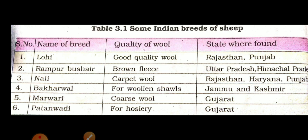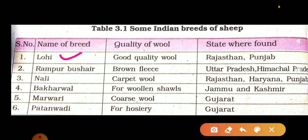There are some Indian breeds of sheep. The first is called Lohi. Lohi has good quality wool and it is found in Rajasthan and Punjab. Next is Rampur Bushair. It has brown fleece and it is found in Uttar Pradesh, Himachal Pradesh, etc.